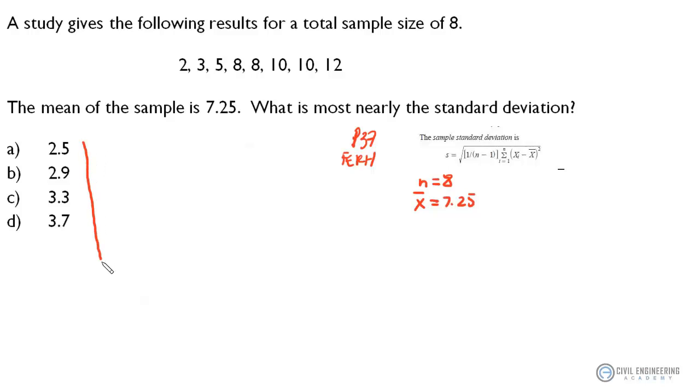Let's create a big radical sign here, because we've got a lot of terms to fit under it. And we're going to start with the first term. So, we've got 1 over the number of samples minus 1 all times